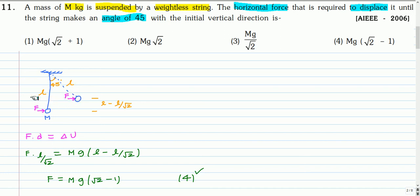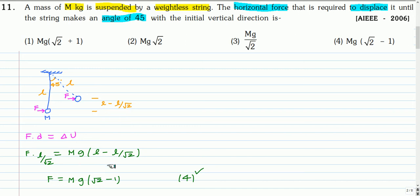The component of displacement along the direction of force is L/√2. So F × (L/√2) equals the increase in gravitational potential energy, which is mg times the increase in height. The increase in height is L − L/√2. So from this, you get the constant force as mg(√2 − 1).